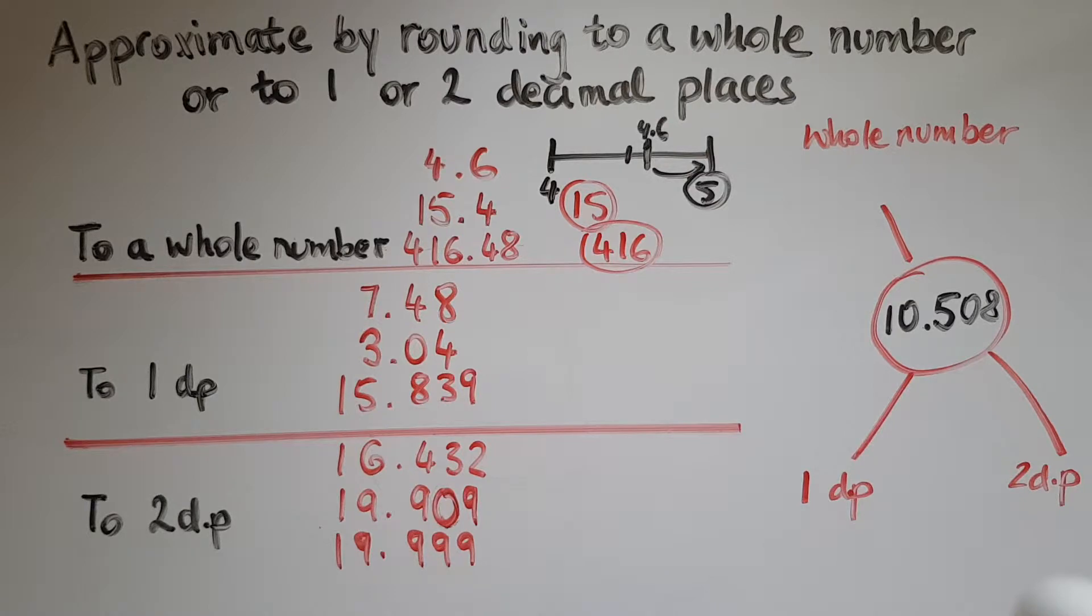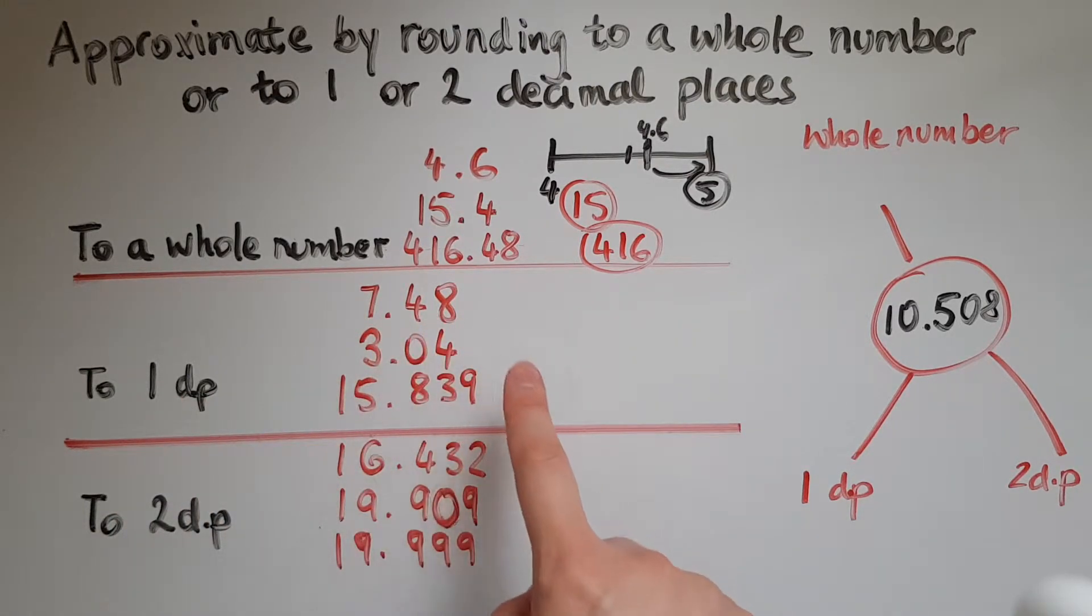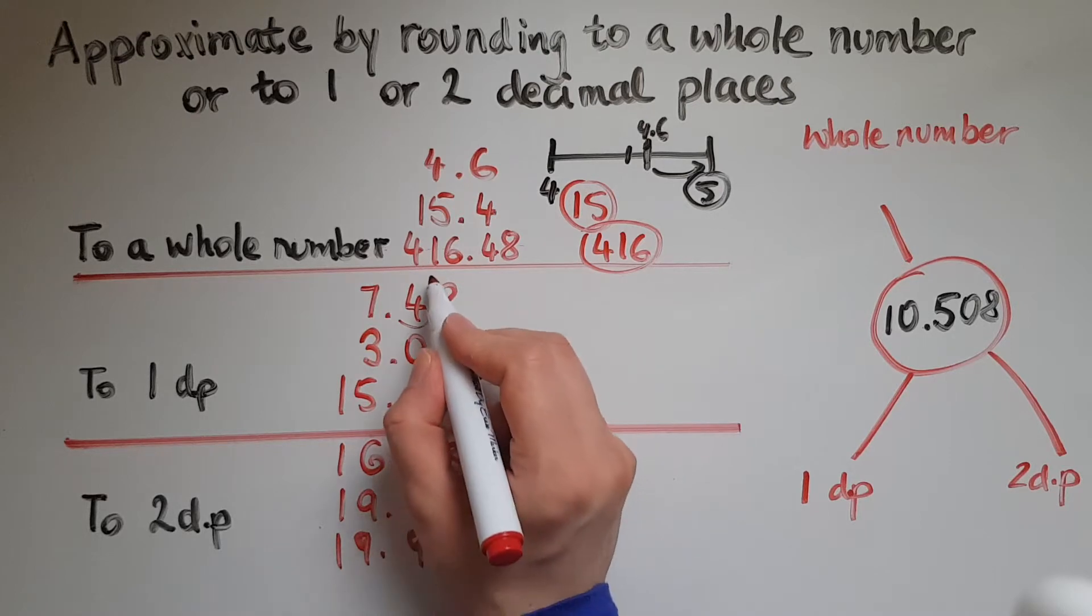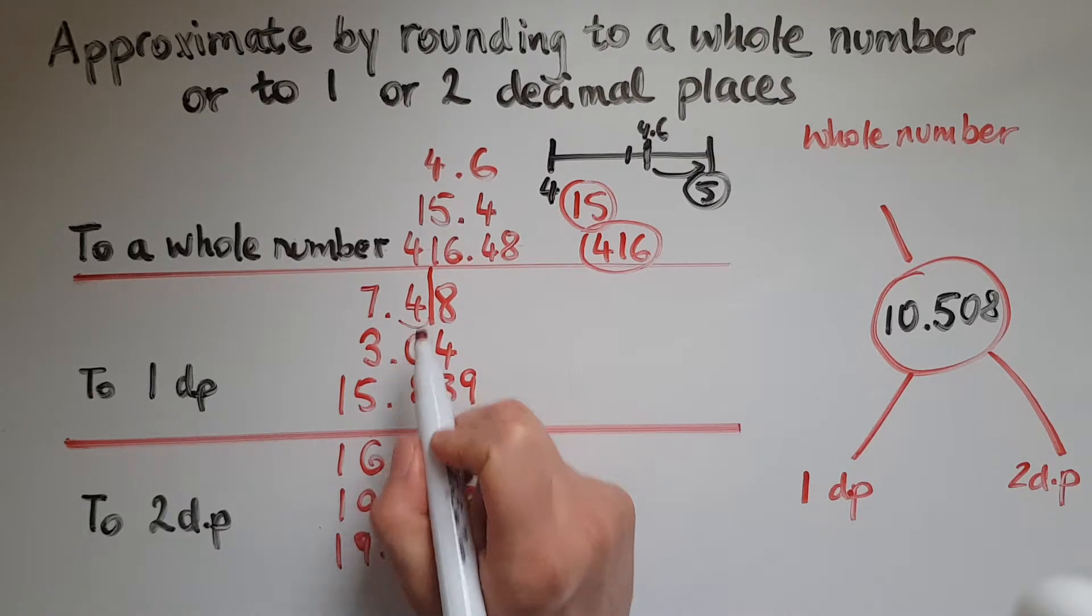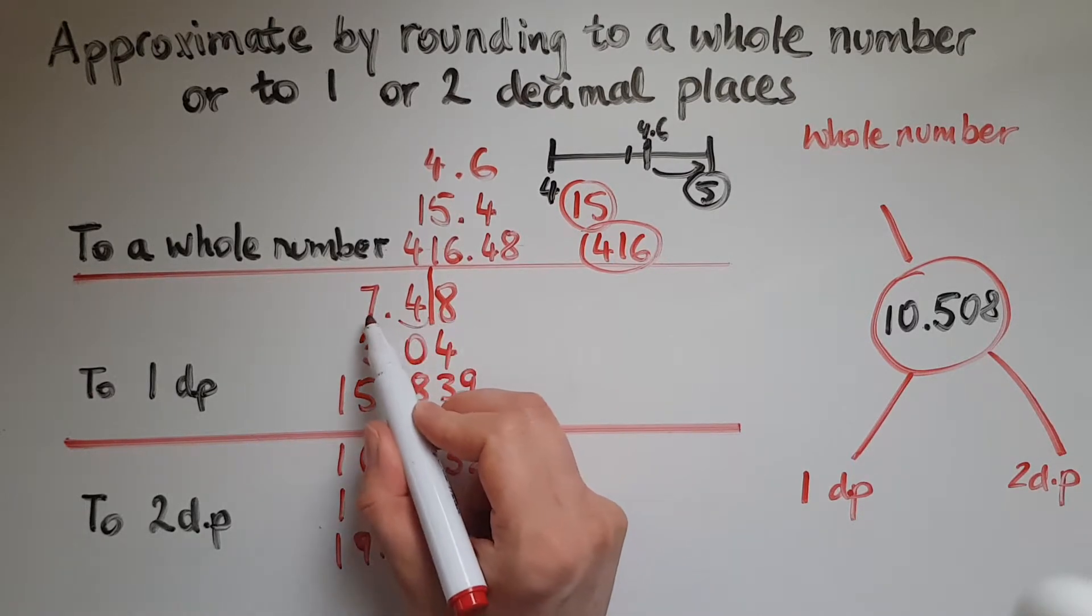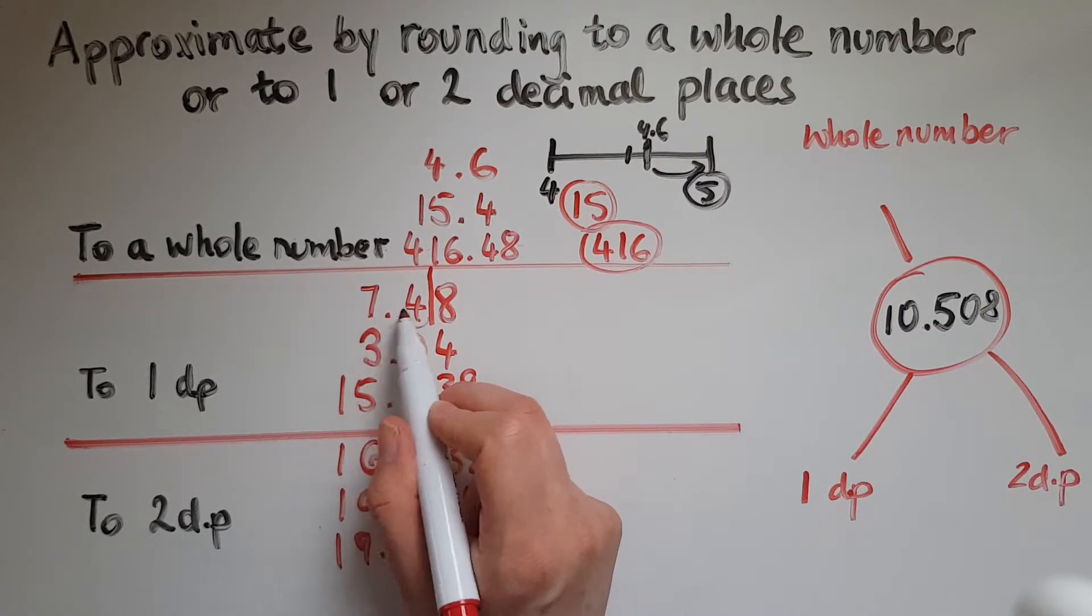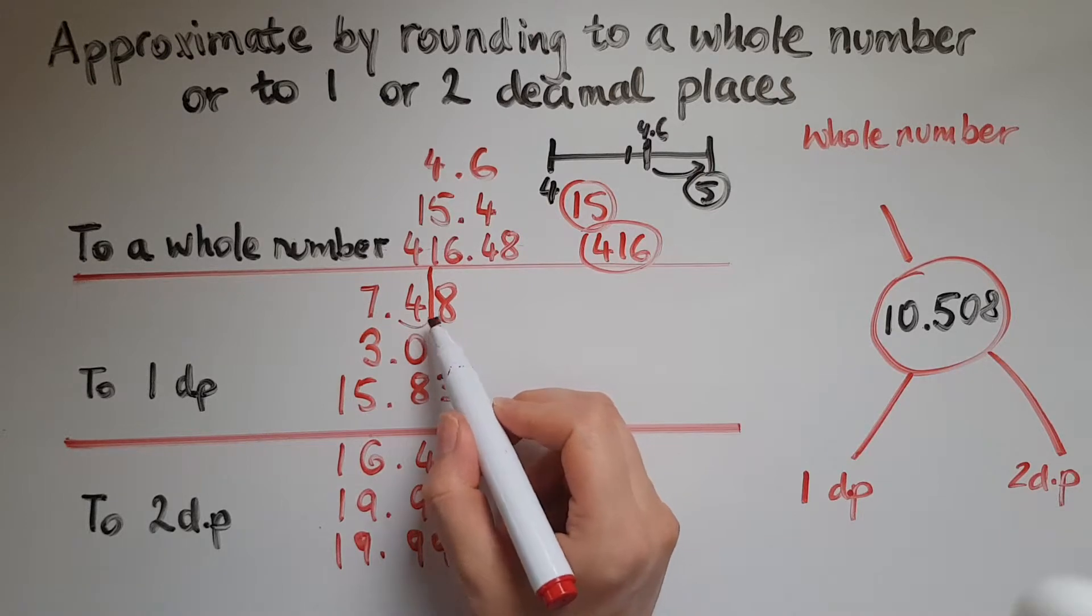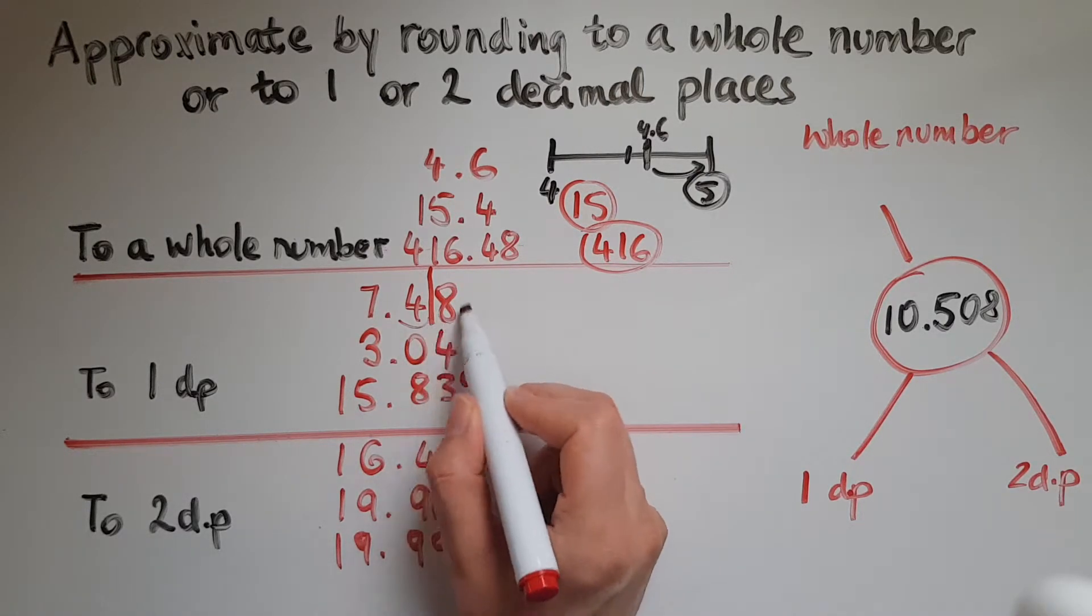Now to one decimal place. So we've got 7.48. We need to have just one decimal place, meaning that I need to cut off this decimal here. So I need to have just 7.4 or 7.5. So which one is this closer to? And of course it is closer to 7.5 because of the 8.